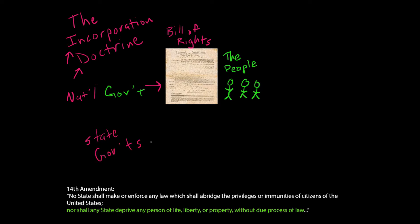Originally, the Bill of Rights didn't protect us from state governments. It only protected us from the national government. So if the state governments wanted to restrict your gun ownership, or subject you to cruel and unusual punishment, or restrict your speech or religion, they perhaps could.